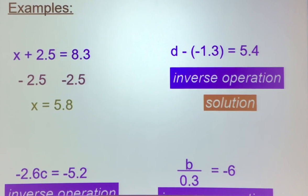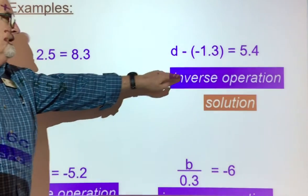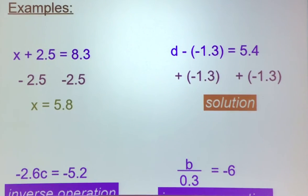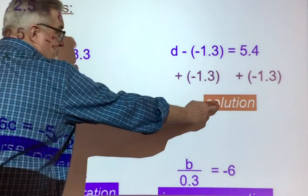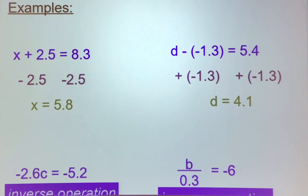The next example is a subtraction equation, but notice they're subtracting a negative 1.3. The inverse operation is to add negative 1.3 to both sides. On the side with the variable, subtracting and adding it back cancels out, leaving just d. On the other side, 5.4 plus negative 1.3 gives us d equals 4.1.